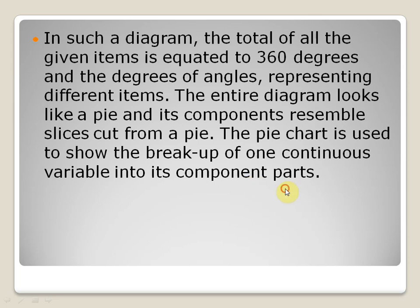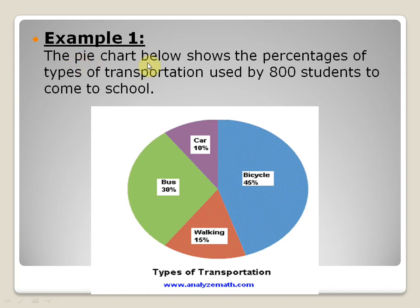The pie chart below shows the percentages of type of transportation used by 800 students to come to school. You can see that 10% of the students are using car, 45% bicycle, 30% bus, and 15% are walking to the school.